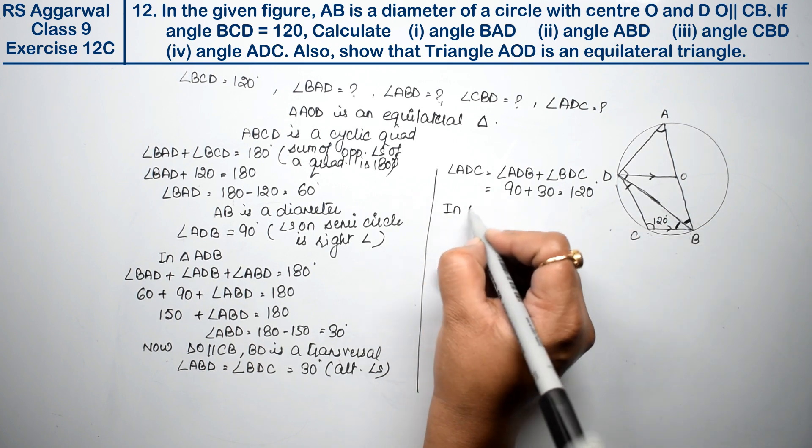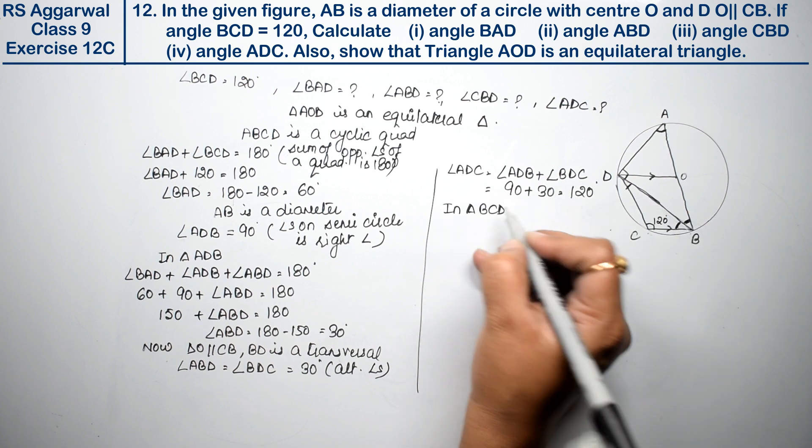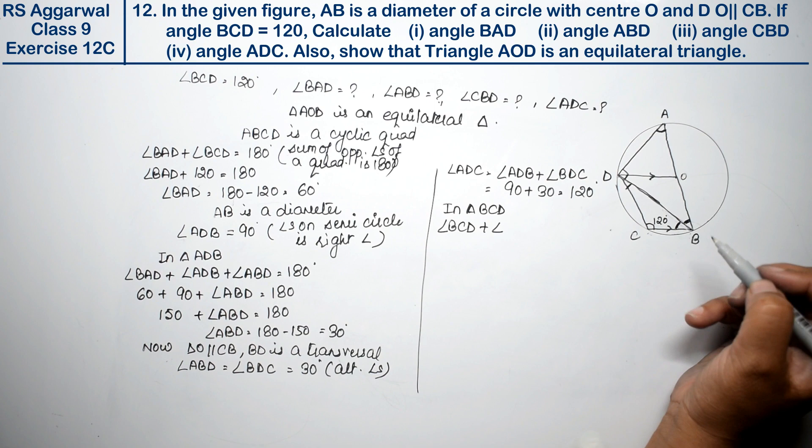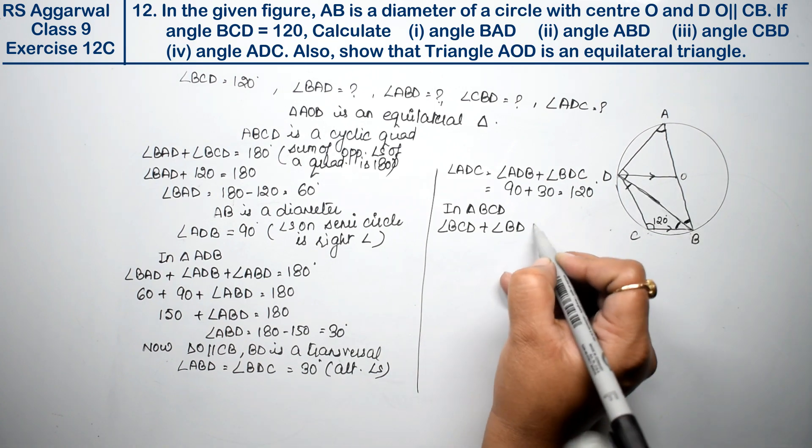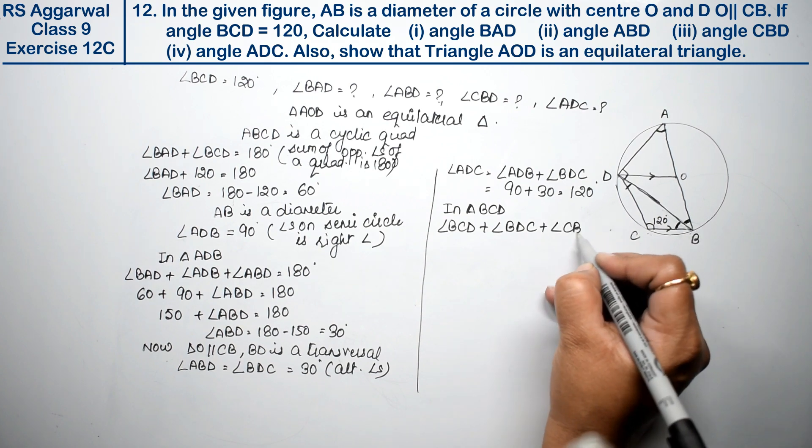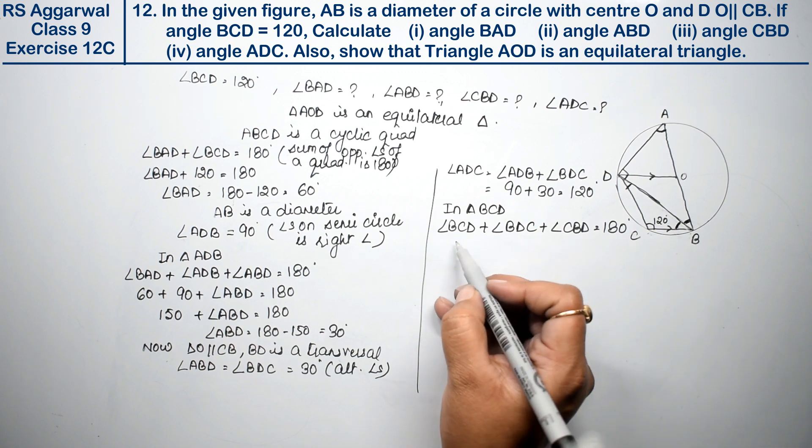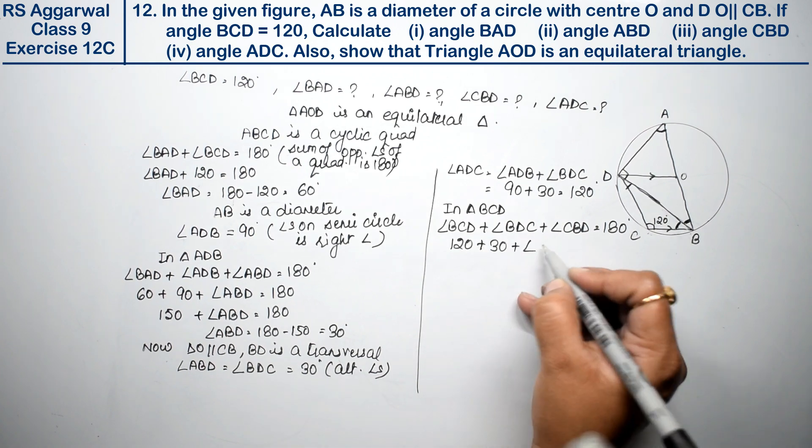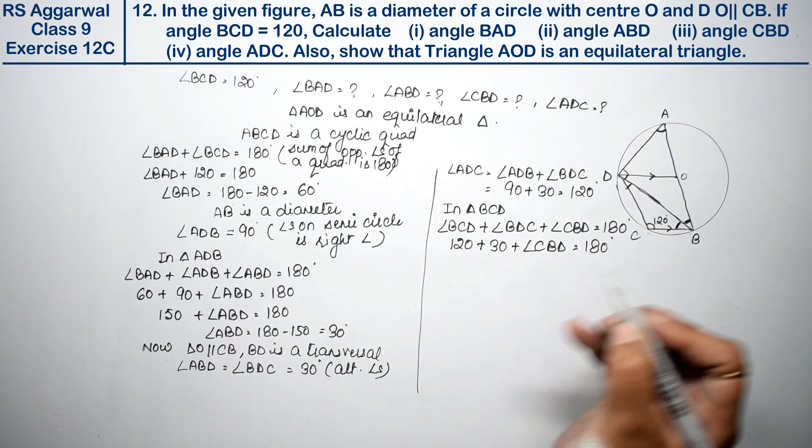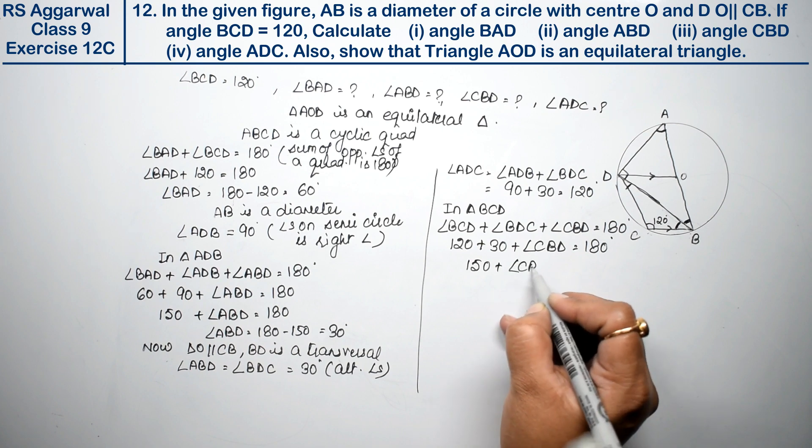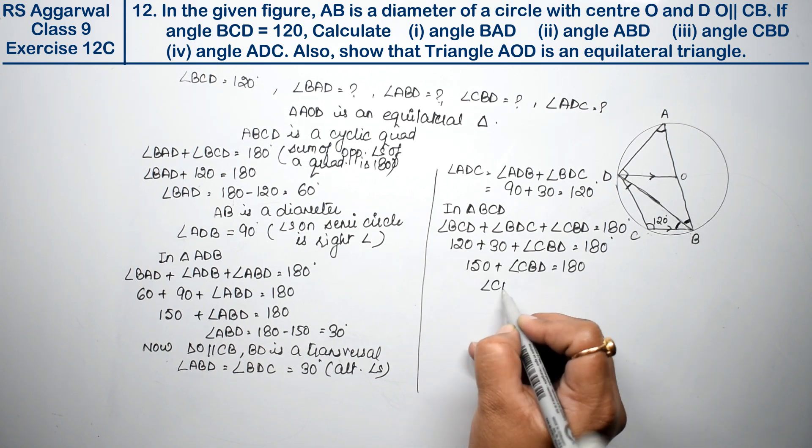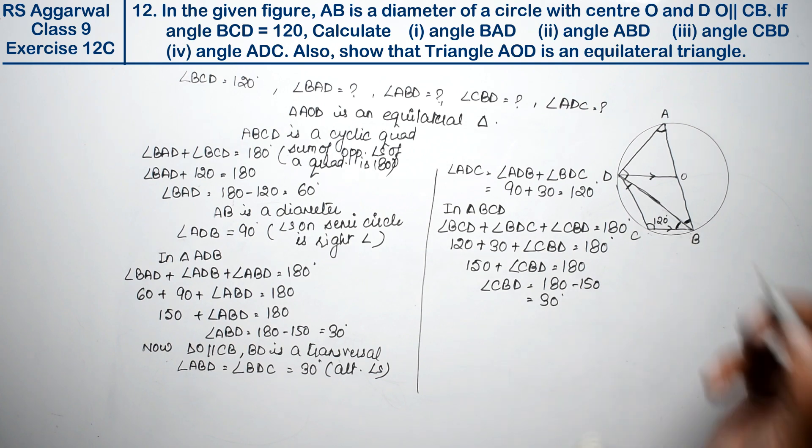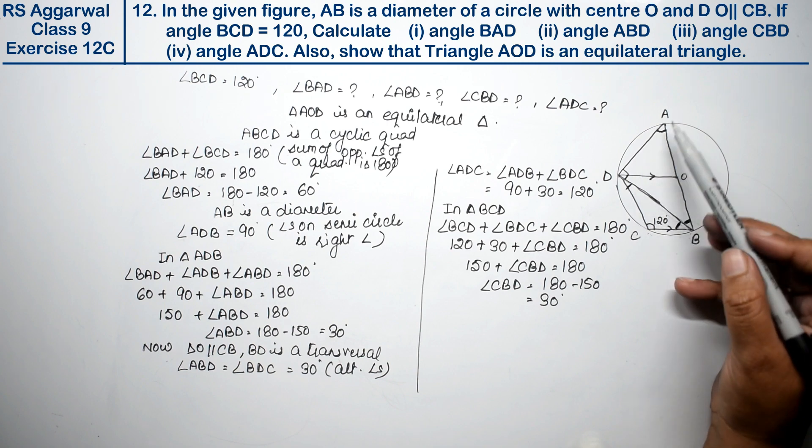Now for CBD, in triangle BCD, angle BCD plus angle BDC plus angle CBD equals 180. BCD is 120, BDC is 30, so 150 plus angle CBD equals 180. Therefore, angle CBD equals 180 minus 150, which is 30 degrees.